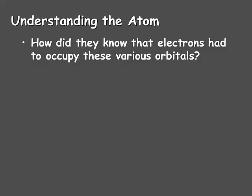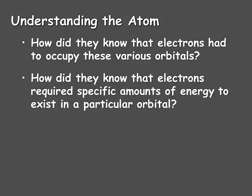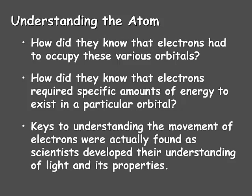We just talked about different ways to discuss the location of electrons within an atom — different orbital locations, different spins, and things like that. But how did they know that electrons had to occupy these various orbitals? How did they know that electrons required specific amounts of energy to exist in a particular orbital? The keys to understanding the movement of electrons were actually found as scientists developed their understanding of light and its properties, as discussed when talking about Bohr and his desire to explain the spectrum of hydrogen.